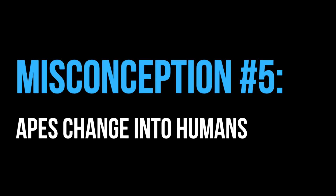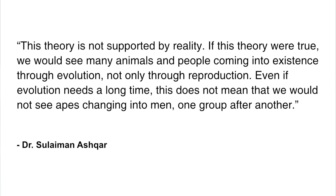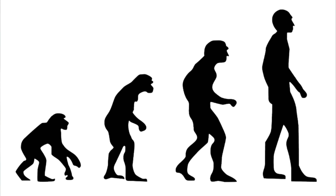Misconception number five: apes change into humans. Again, quoting the scholar, 'This theory is not supported by reality. If this theory were true, we would see many animals and people coming into existence through evolution, not only through reproduction. Even if evolution needs a long time, this does not mean that we would not see apes changing into men, one group after another.' Here, Eshgar is saying that we should see apes changing into humans if evolution is true. He thinks evolution states that humans evolved from the present-day great apes.